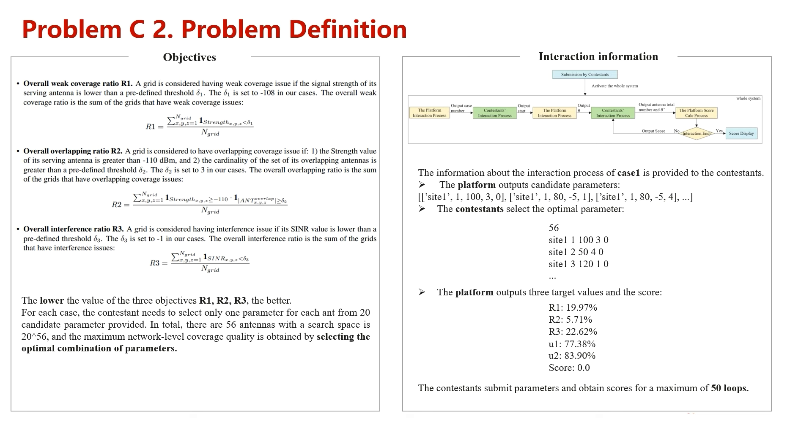For overlapping ratio, we need to consider the strength value of the serving antenna and the predefined threshold. The overall overlapping ratio is sum of grids that have overlapping coverage issues.